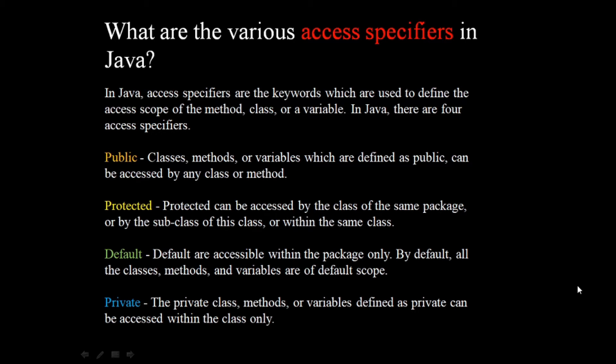Coming on to the protected access specifier — protected members can be accessed by the class of the same package or by the sub-class of this class. Whenever a method, class, or variable is protected, it can be accessed only by classes in the same package or by sub-classes of that class.